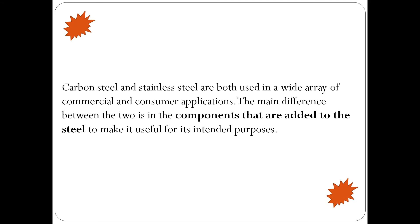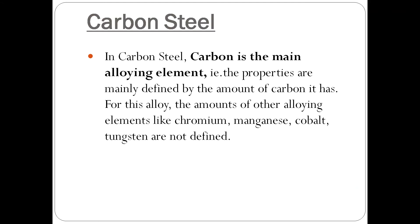Let's look at carbon steel first. In carbon steel, carbon is the main alloying element. Other alloying elements are also present, but since they appear in impurity-level amounts, they are not considered a major part of the ingredient list. Because carbon is the main alloying element, the properties of carbon steel are mainly defined by the amount of carbon it contains — it is carbon that dictates the properties of carbon steel.